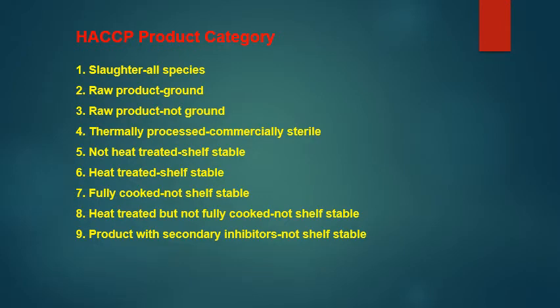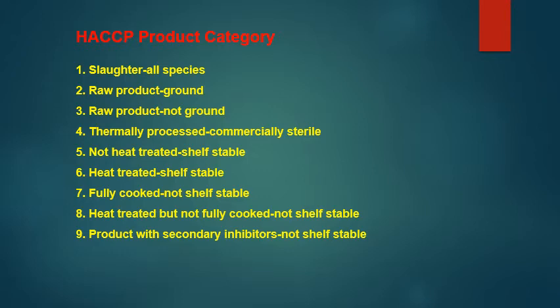Here are the different HACCP product categories related to meat and meat products — there are nine categories. Category 1 is slaughter of all species. Category 2 is raw product that is ground or minced meat. Category 3 is raw product not ground. Category 4 is thermally processed, commercially sterile product. Category 5 is not heat treated but shelf-stable. Category 6 is heat treated and shelf-stable. Category 7 is fully cooked but not shelf-stable. Category 8 is heat treated but not fully cooked and not shelf-stable. Category 9 is product with secondary inhibitors, not shelf-stable.